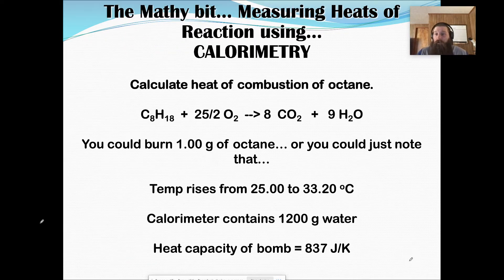Now, if I want to look at this in terms of an actual equation or an actual reaction, I have here octane, which is what's in gasoline. And octane is going to react with oxygen to produce carbon dioxide and water. Now, we could go out and just burn one gram of octane, or when we do our calorimetry, we can note what the temperature change is in the water. So the water goes from 25 to 33.2 degrees Celsius. We know the calorimeter has 1,200 grams of water in it. We know that the heat capacity of our bomb is 837 joules.